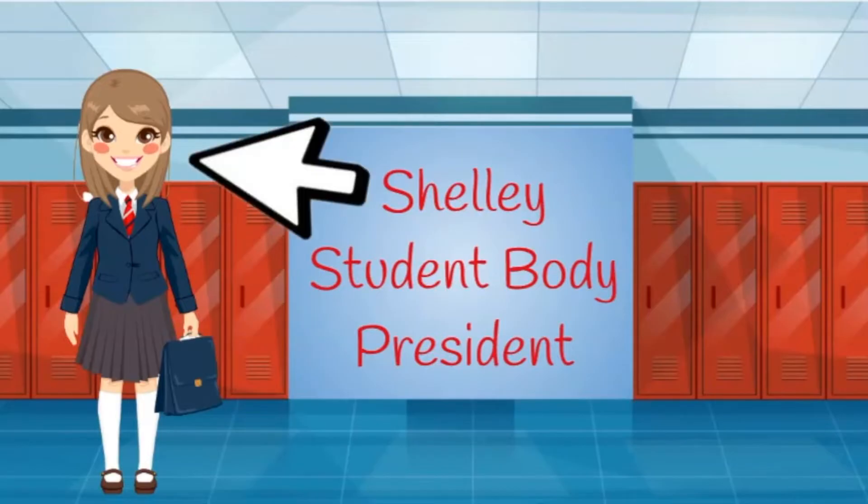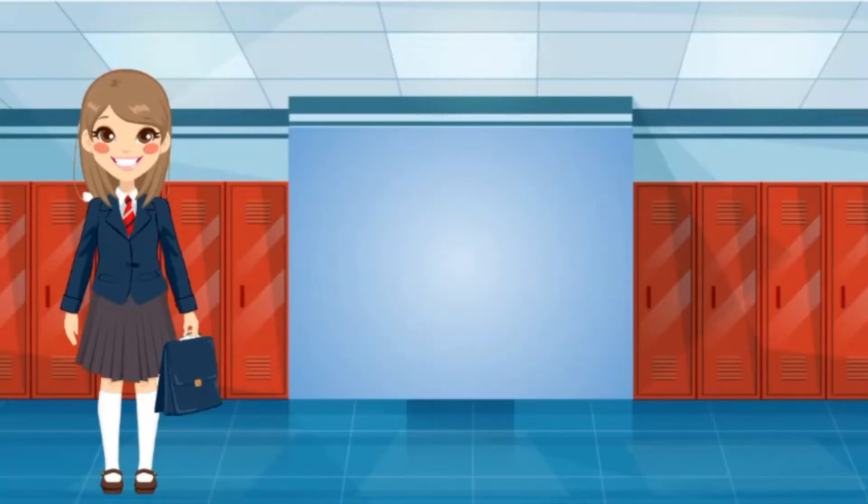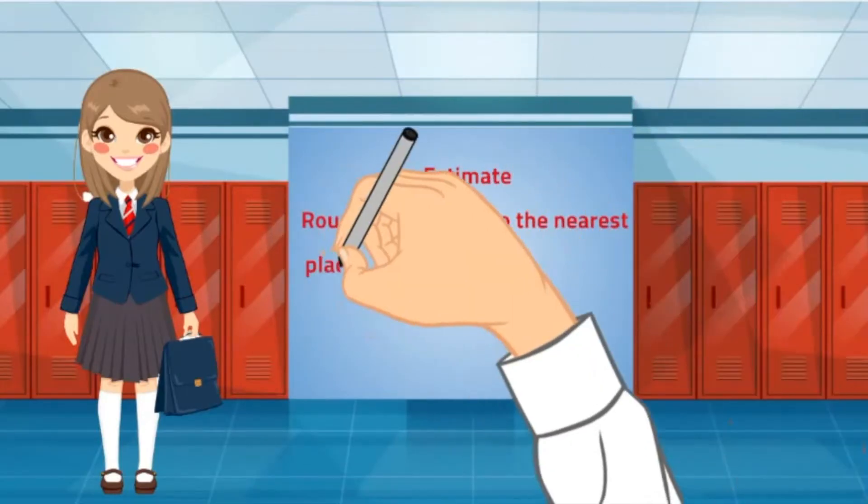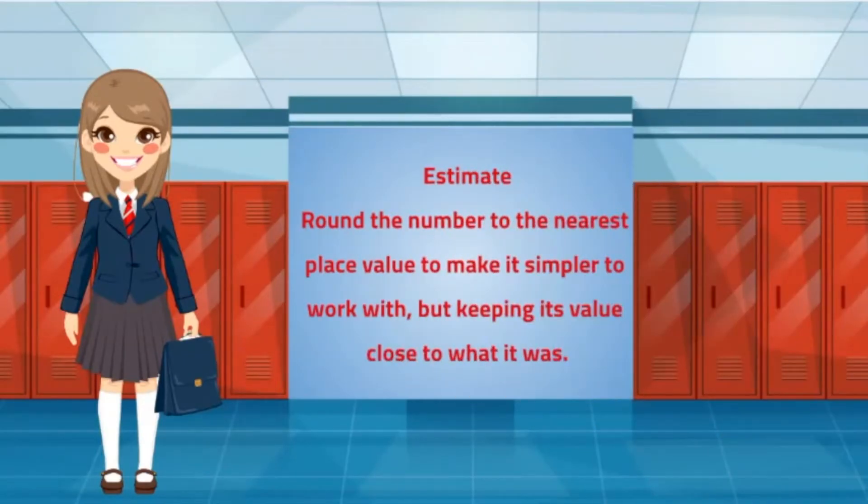But first I have to estimate some quotients to figure out how many supplies to buy. I just learned how to estimate in third period math. To estimate means to round the number to the nearest place value to make it simpler to work with, but keeping its value close to what it was.